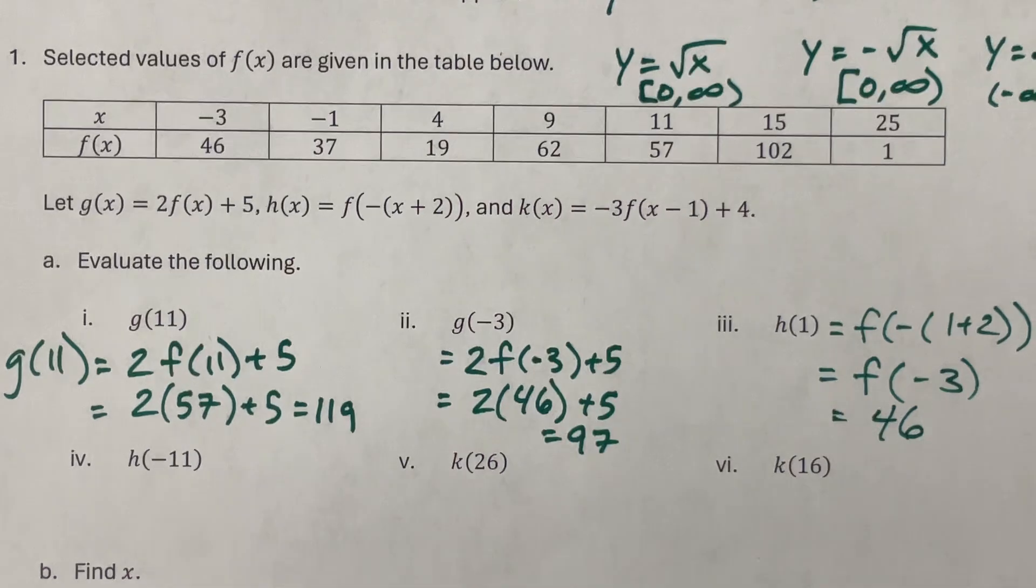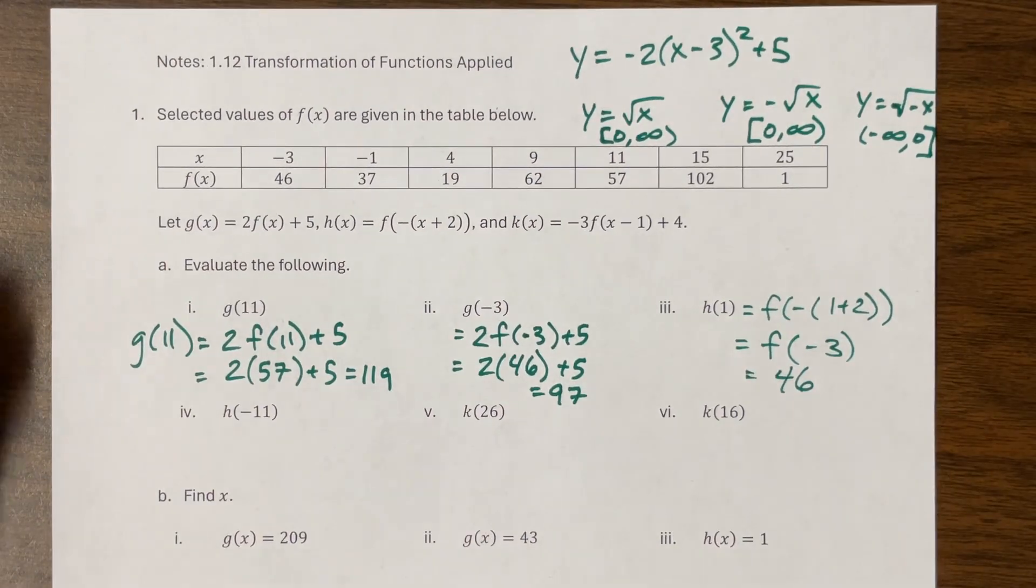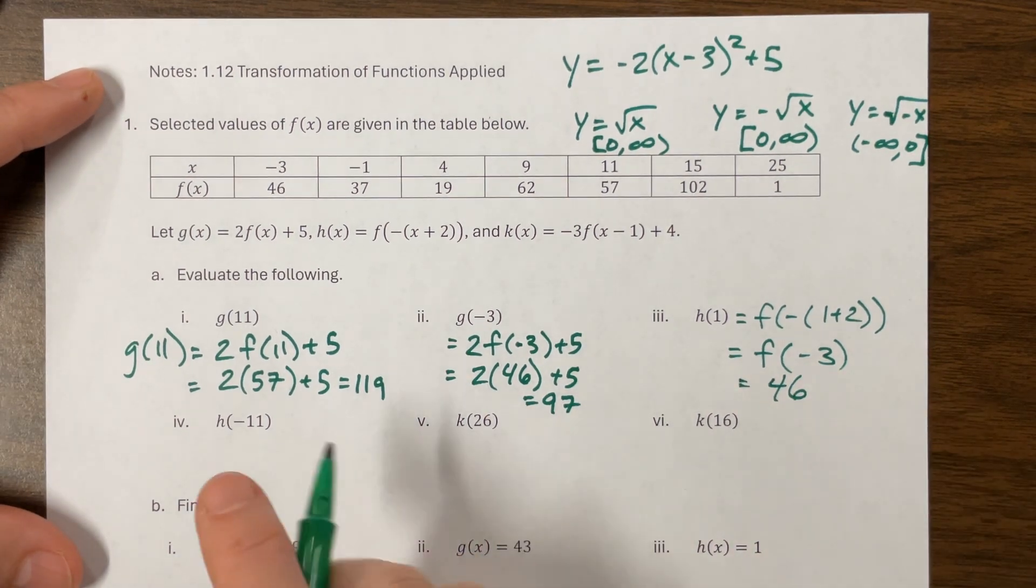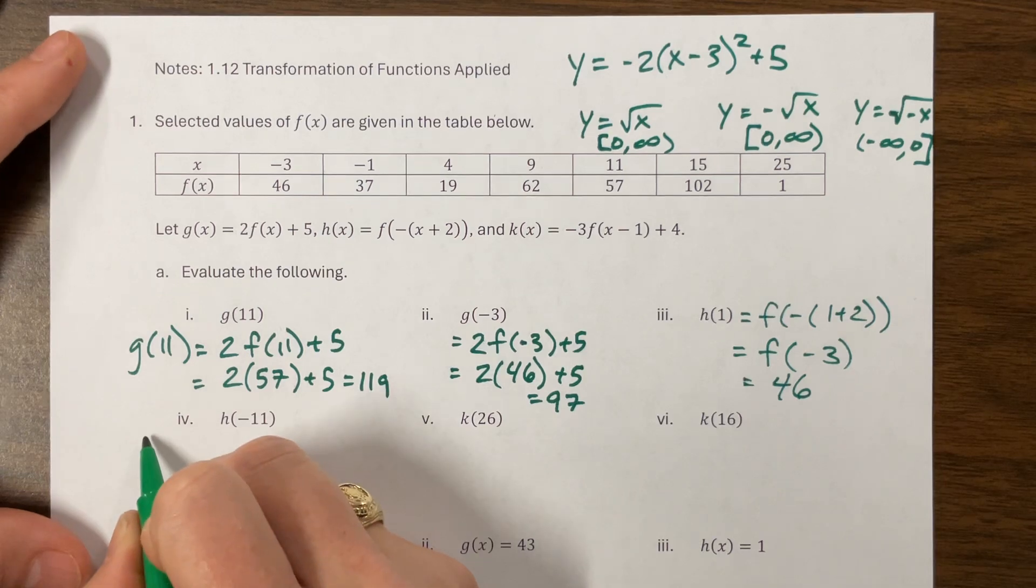Or we could just say, well, this is equal to F of, this is 3, so negative 3. What is F of negative 3? 46. On these, to be honest with you, when it comes to these table problems, I find it a little more, I find more confidence in plugging it in and solving the equation. So that, I get better results personally.